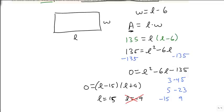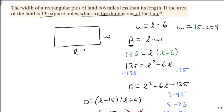Now that we know that l is 15, we can replace it, and we can get that w is 15 minus 6, which means w is 9. So my plot of land is 15 miles long and 9 miles wide.